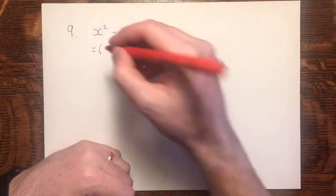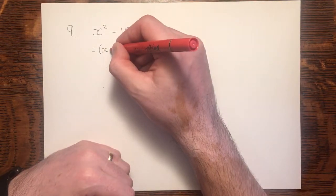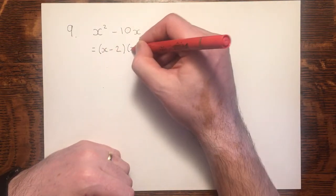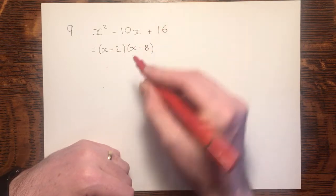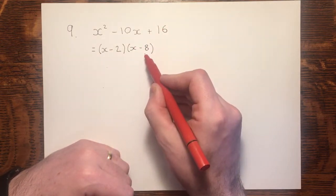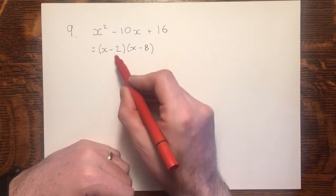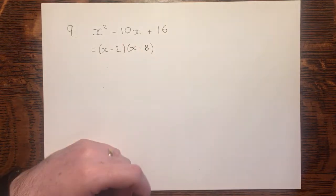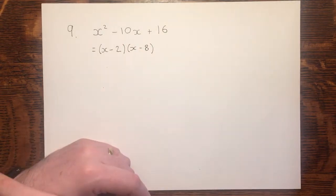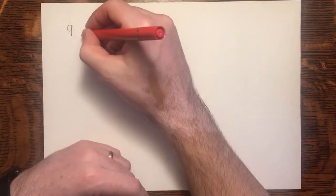In this case, if I have x minus 2 and x minus 8, minus 2 times minus 8 gives me positive 16, and the sum of these two gives me minus 10. If I was to expand that, I would get back to the original expression, and that's a good way of testing my factorisation. And that's all we had to do in part A.